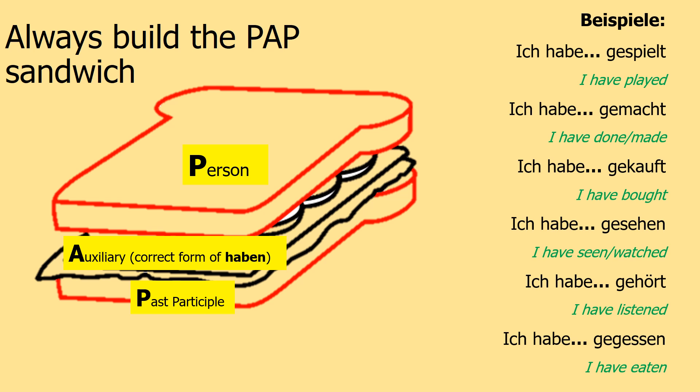In English we turn 'I play' into 'I have played' by adding -ed. In German there are patterns too. We've got: ich habe gespielt, ich habe gemacht, ich habe gekauft, ich habe gesehen, ich habe gehört, and ich habe gegessen. The first pattern to notice is that they all have 'ich habe'. Then, looking at the past participle, they all start with 'ge-' — that's something to remember straight away when using the past tense.